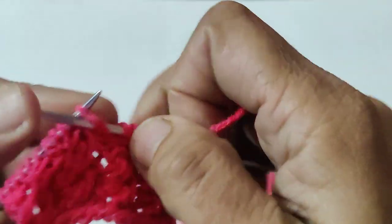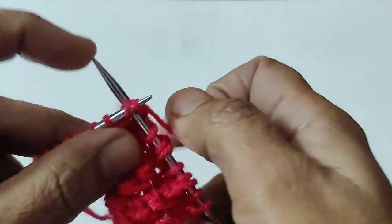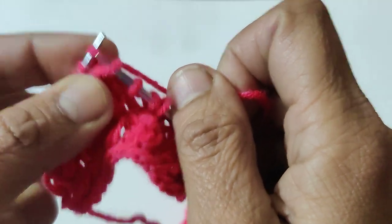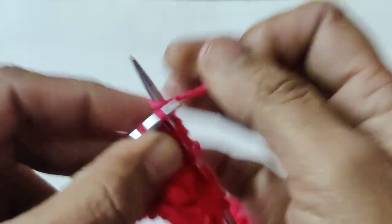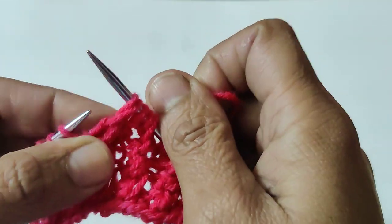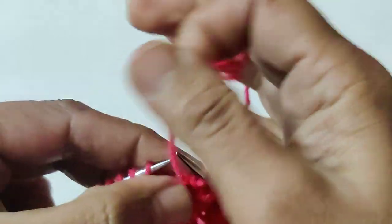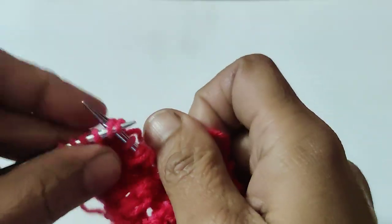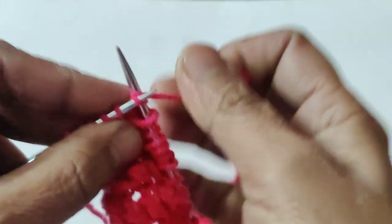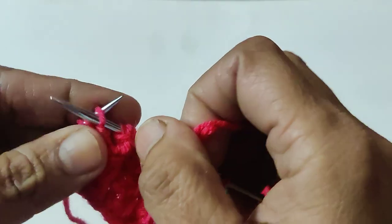We knit the same pattern. Go through the back of the second stitch and knit the first one. Then we will drop both stitches. Repeat this pattern: one stitch reverse, go between these two stitches, knit the second through the first and drop both stitches.